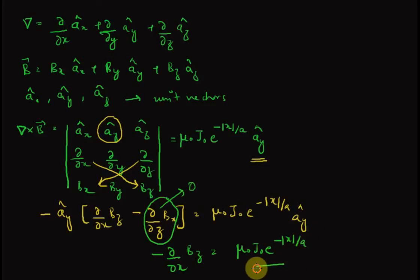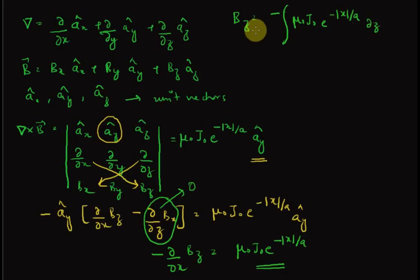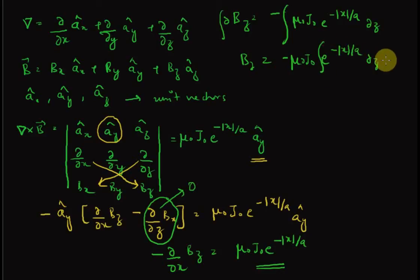This is the simplified equation for the magnetic flux density. We go ahead and find B_z by integrating both sides: B_z equals minus the integral of mu_0 J_0 e^(|x|/a) dx, plus a constant.